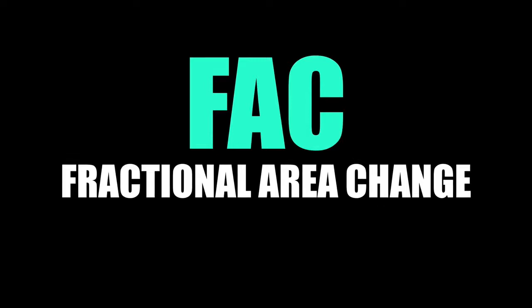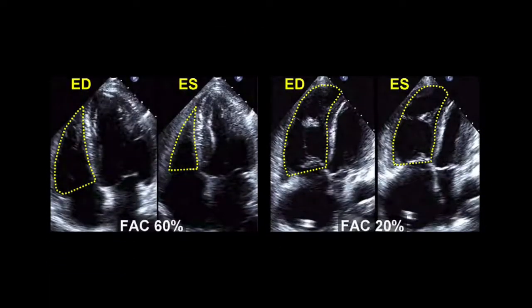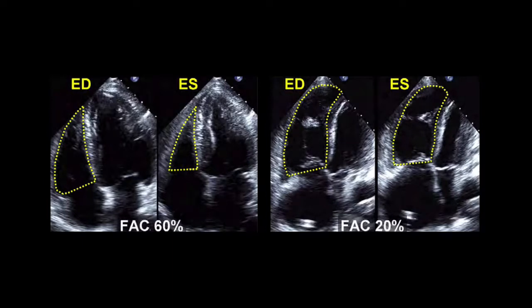Fractional area change is the last one, and it's the hardest to do, so I do it the least. You need to get the RV-focused view — it's tilted a little bit. You measure the area in end systole and the area in end diastole: biggest number minus smallest number, divided by the biggest number, times a hundred, and you'll get a percentage. Greater than 35% is considered normal; less than 35% is considered abnormal. This is the most cumbersome one, but it is listed in textbooks as an option.